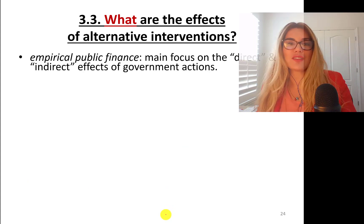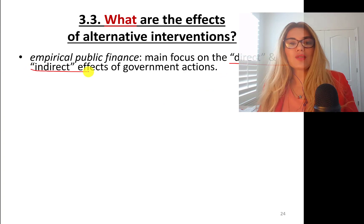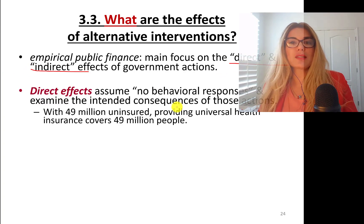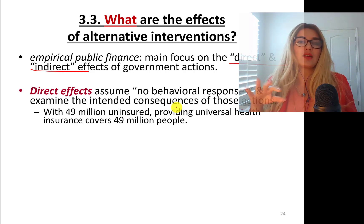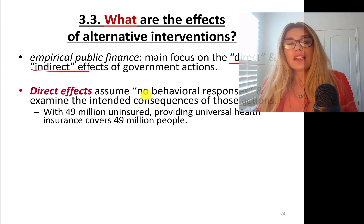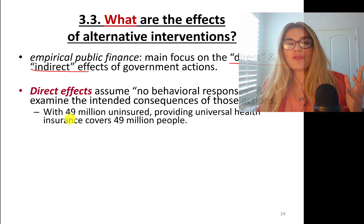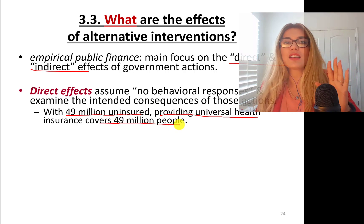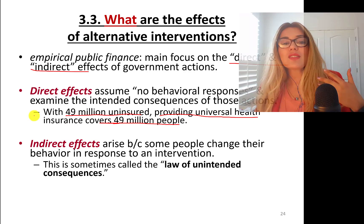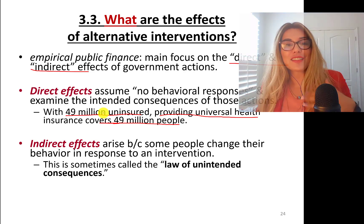Question number three: what are the effects of alternative interventions? In empirical public finance, we focus on direct and indirect effects of government actions. The direct effect assumes no behavioral responses — for instance, building roads so people can commute. Direct effects assume intended consequences happen. For example, in 2007 there were 49 million uninsured people, and providing universal health insurance would cover all 49 million.